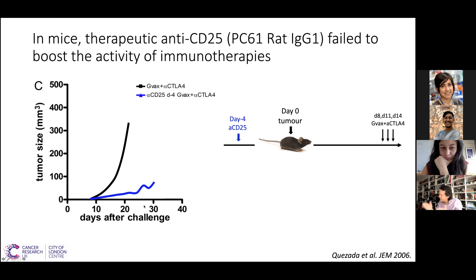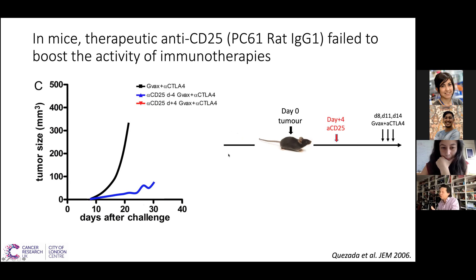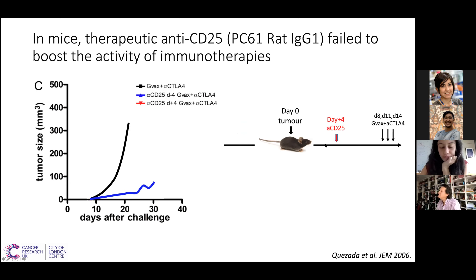Fred took the PC61 variable region and cloned it into a classical mouse IgG2a to make it a proper depleting antibody. He recovered affinity to FC gamma receptor 4. Then he ran the experiment. He went from no depletion and only downregulation of CD25 with the old antibody, to a fourfold reduction in the frequency of regulatory T-cells. He fixed the antibody's ability to deplete T-regs simply by getting FC receptors to properly engage the FC portion of the antibody.